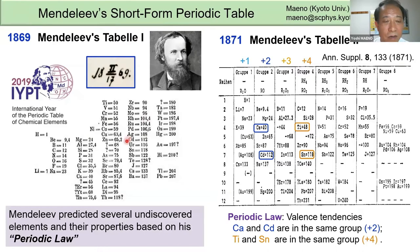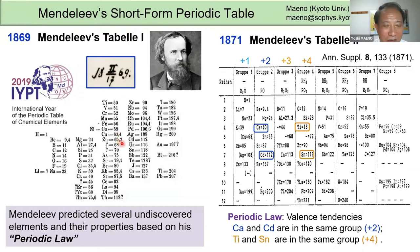Let me start with Mendeleev's short form periodic table. About 150 years ago, Mendeleev invented this periodic table — his interesting signature reads 1869 February 17th. Two years later he had a refined version in which elements with similar valence tendencies are in the same column. For example, calcium and cadmium are both divalent, so they are in the same column, as are titanium and tin.